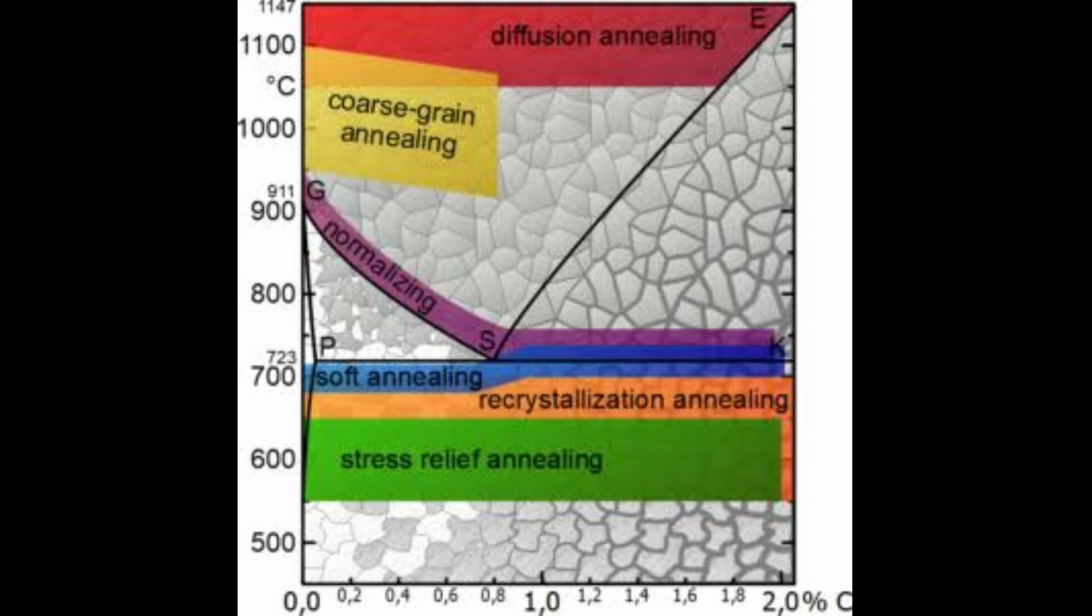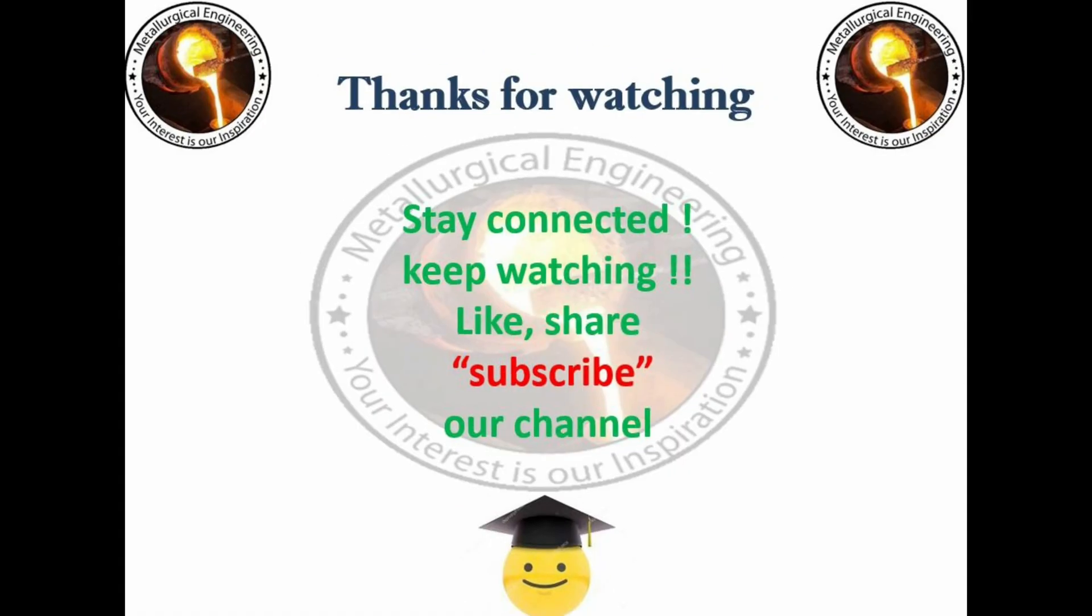Annealing is a heat treatment process used mostly to increase the ductility and reduce the hardness of a material. This change in hardness and ductility is a result of the reduction of dislocations in the crystal structure of the material being annealed. Thank you for watching this video.